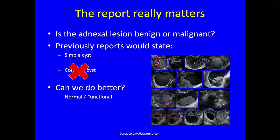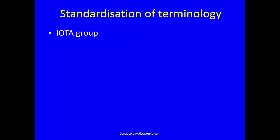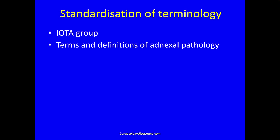We can describe a mass as either normal or functional, benign, or whether it's malignant — if it's borderline, invasive, or metastatic to the ovary. First we need to standardize our terminology. The IOTA group gave us a language in their terms and definitions of adnexal pathology, all developed using transvaginal ultrasound.